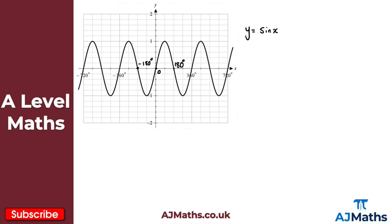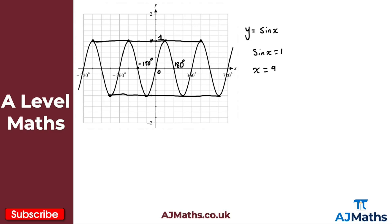It also has a maximum value of one and a minimum value of minus one. We can see the maximum here, and that extends for negative values too — a height of one. The minimum value of minus one can also be seen. So sine x is equal to one, and this occurs when x is equal to 90 degrees, as we can see here.